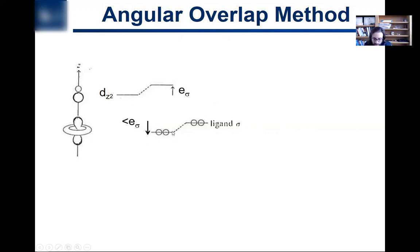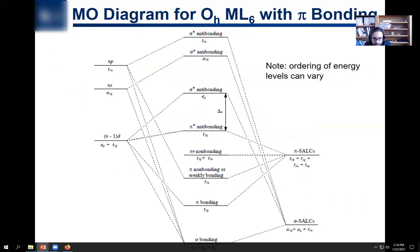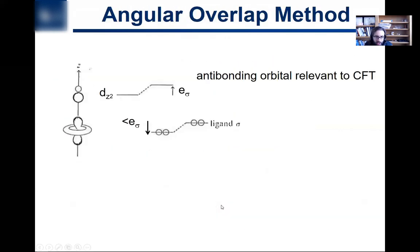And correspondingly, this orbital, which is a ligand orbital, it's this one, this EG, that one is going to go down. It's going to go down by some value, whatever it's going to be, we know it's going to be less than e-sigma, because bonding, anti-bonding orbitals always go up higher than the corresponding.